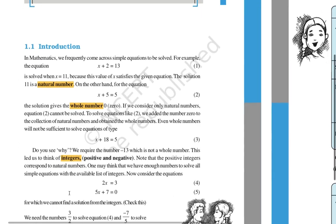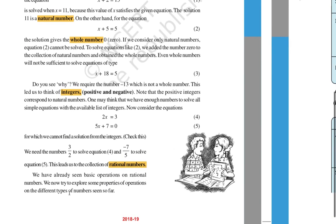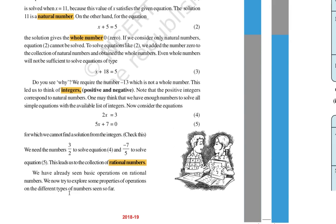You need to understand what I am saying here first, then we can understand the chapter very easily. Now coming to rational numbers — using these numbers if we are making some fractions and representing them on a number line, any number which can be written in the form of p by q, where q (the denominator) is not equal to 0, is called a rational number.